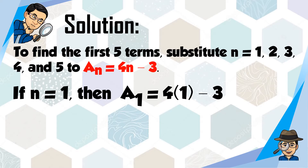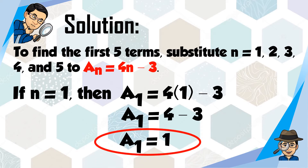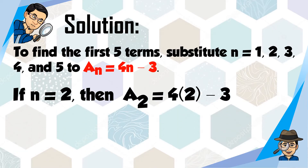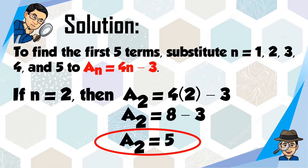If n is equal to 1, then a sub 1 is equal to 4 times 1 minus 3. What is 4 times 1? That is 4. And 4 minus 3 is 1. So the first term is 1. If n is equal to 2, then a sub 2 is equal to 4 times 2 minus 3. What is 4 times 2? That is 8. And 8 minus 3 is equal to 5. So 5 is the second term.